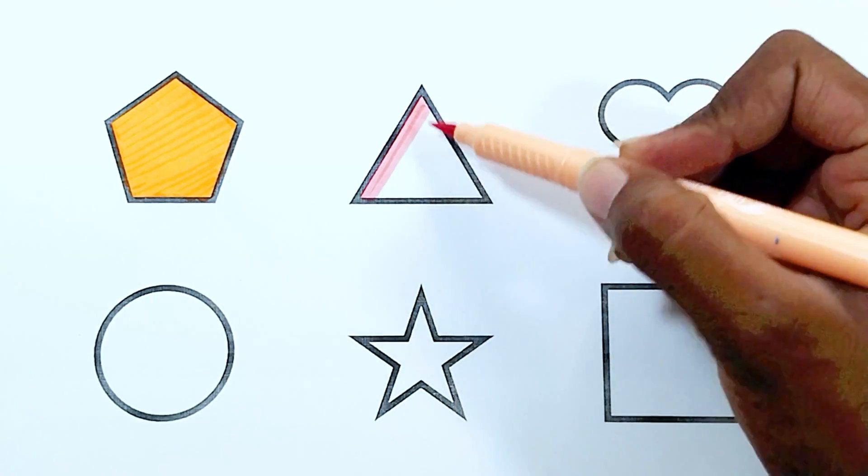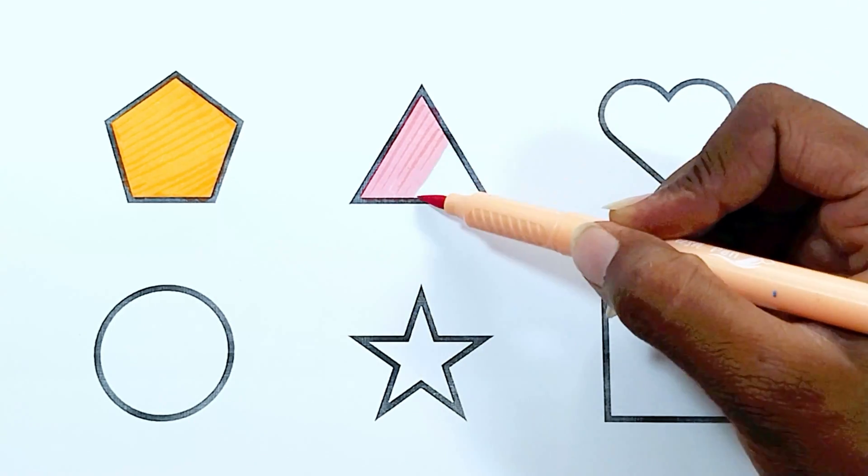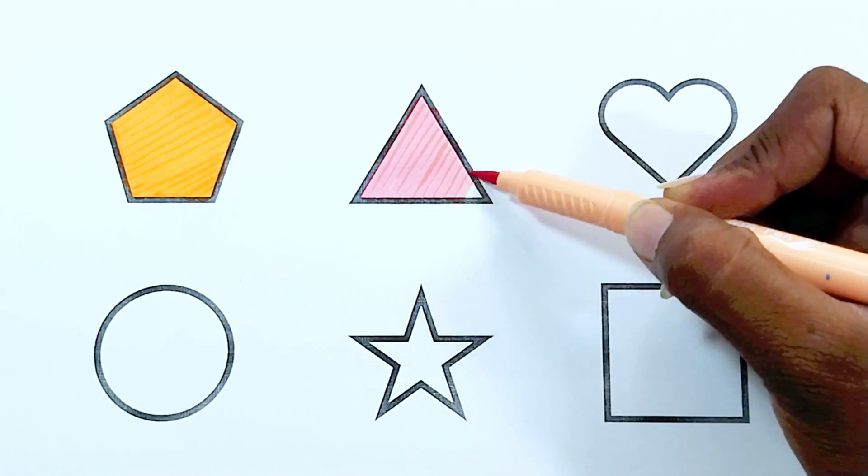Peach color. Peach color triangle. The shape is peach color triangle.